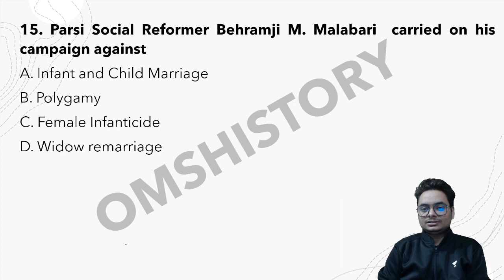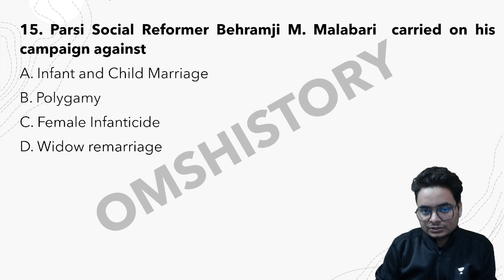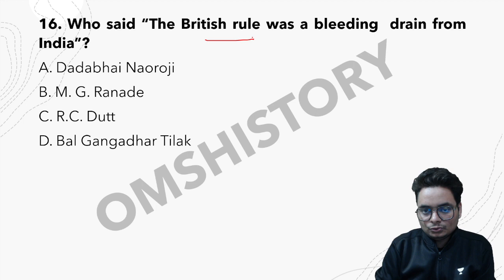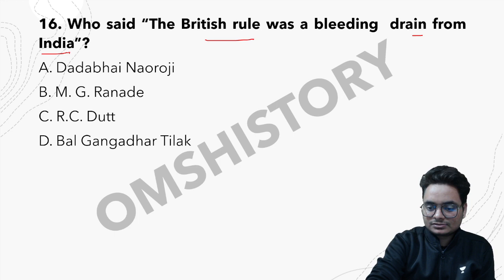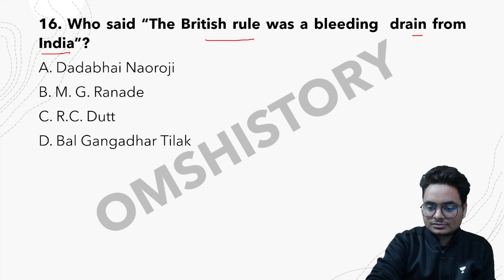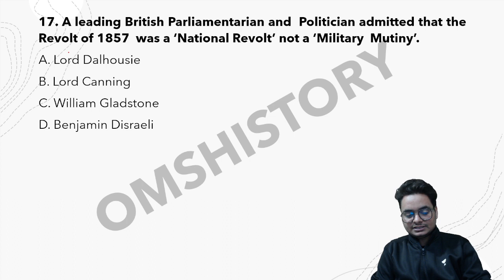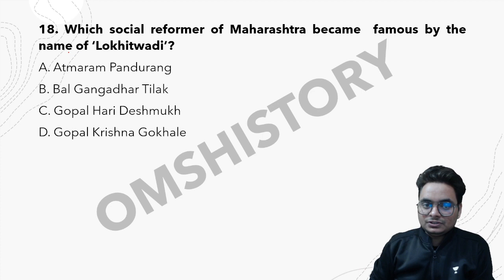The Parsi social reformer Behramji M. Malabari carried on his campaign against infant and child marriage, polygamy, female infanticide, and widow remarriage — the question is based on him. He is an important Parsi reformer, so know a bit about him. Next: who said that British rule was a 'bleeding drain' from India? Then: a leading British parliamentarian admitted that the Revolt of 1857 was a national revolt and not a military mutiny — an important question, as most contemporary sources tried to downplay the civil nature of the revolt.